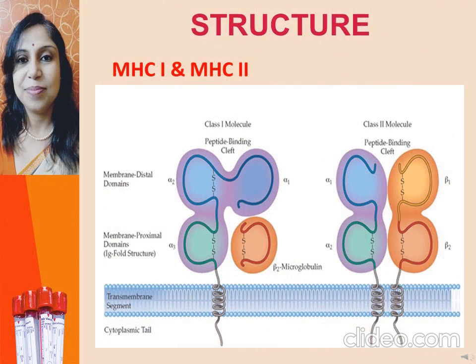MHC class 1 proteins are heterodimers in nature, composed of a polymorphic alpha chain linked non-covalently to a non-polymorphic beta-2-microglobulin chain. The alpha chain is organized into three extracellular globular domains named alpha 1, alpha 2, and alpha 3. MHC class 2 proteins are also heterodimers consisting of non-covalently associated alpha and beta chains, both of which are polymorphic in nature. Each chain contains two extracellular domains: alpha 1, alpha 2 and beta 1, beta 2 respectively.